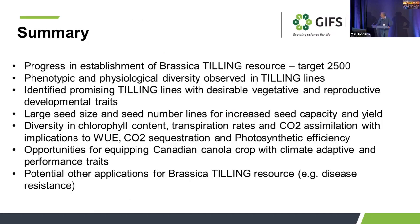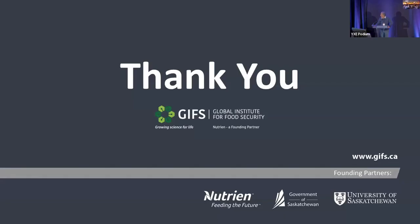To summarize: this TILLING resource has quite high mutation density with about 3,500 lines — we're targeting 2,500 lines for reestablishment. Our analysis shows a lot of diversity in traits directly connected to climate change, sustainability, and yield. We believe this resource can provide a number of opportunities for meeting current and future challenges of the canola crop.